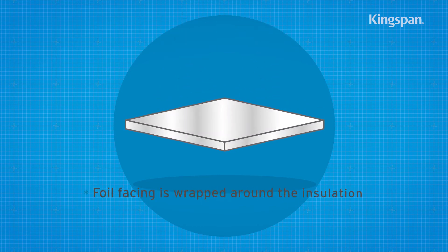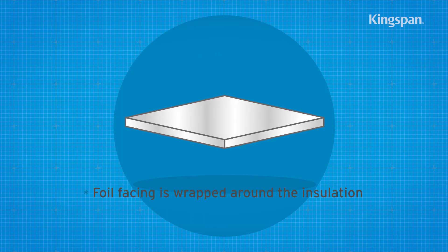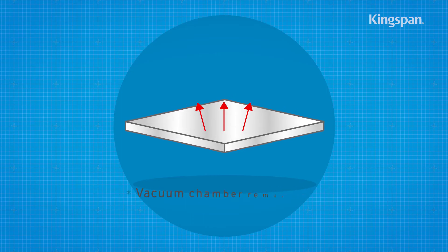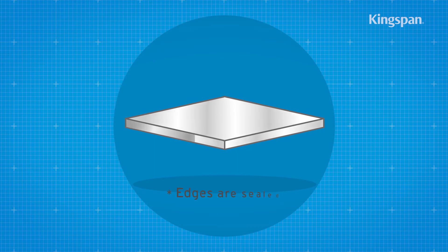A foil facing is wrapped around the insulation and a vacuum chamber is used to remove any further air. To finish, the edges of the vacuum insulation panels are sealed.